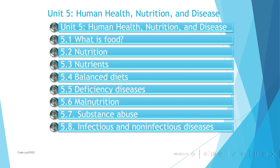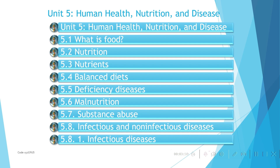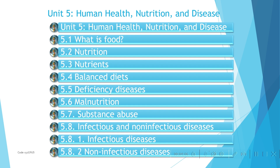On the eighth point, we'll talk about infectious and non-infectious diseases. Infectious diseases can be transmitted from person to person, whereas non-infectious diseases affect individuals but cannot be transmitted through different mechanisms. These are the main points we will discuss in unit five. Under point 5.2, we'll talk about infectious diseases and non-infectious diseases such as high blood pressure and others.